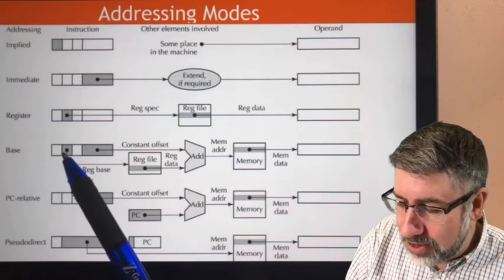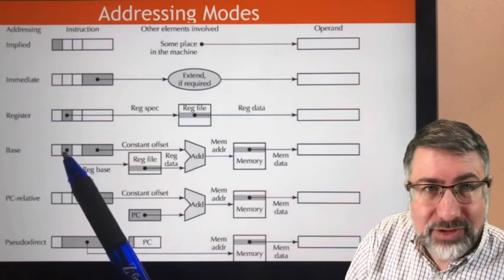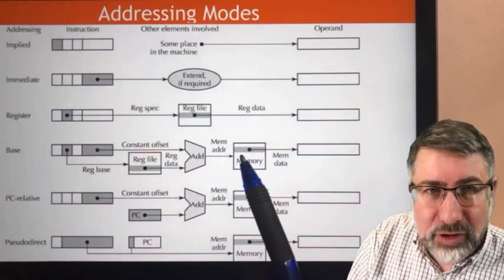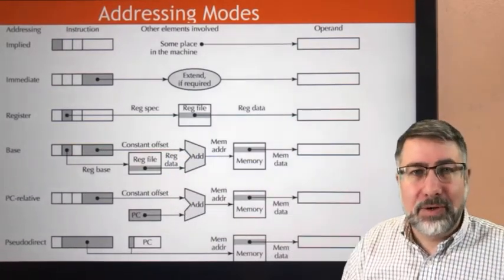It's a four part process. First, we have to take the register specified by the instruction. We look it up in the register file. Then we add the offset to that. Then we look it up in the memory, and that's our operand.